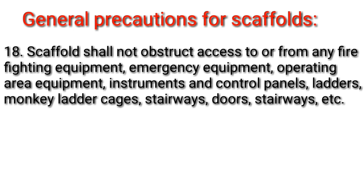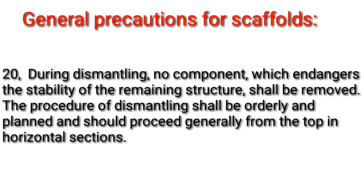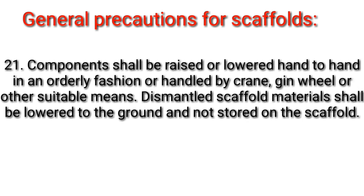17. Scaffolding materials and other objects shall not be dropped, thrown, tipped, or shot from heights; the drop area shall be barricaded. 18. Scaffolds shall not obstruct access to or from any firefighting equipment, emergency equipment, operating area equipment, instruments and control panels, ladders, monkey ladder cages, stairways, or doors. 19. Extension or alteration of a scaffold is not permitted on the approved part of the scaffold being used at that time. Erection and dismantling directly above an approved scaffold platform shall not be allowed. 20. During dismantling, no component which endangers the stability of the remaining structure shall be removed. The procedure of dismantling shall be orderly and planned and should proceed generally from the top in horizontal sections. 21. Components shall be raised or lowered hand to hand in an orderly fashion or handled by crane, gin wheel, or other suitable means. Dismantled scaffold materials shall be lowered to the ground and not stored on the scaffold.